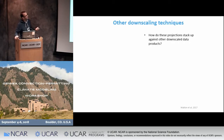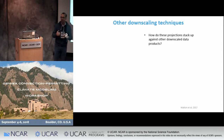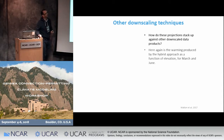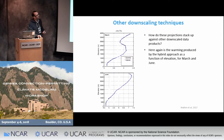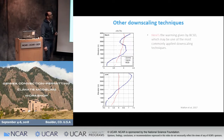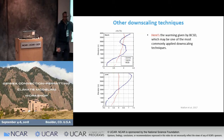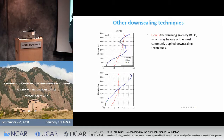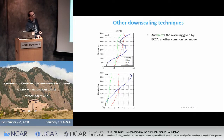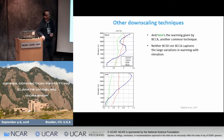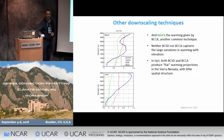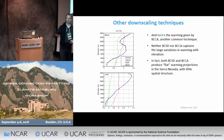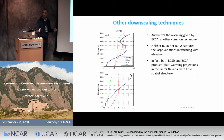How do these projections stack up against other downscaled data products? Here again is the warming from the hybrid approach as a function of elevation, compared with two commonly used purely statistical techniques. BCSD produces a very flat warming pattern with no imprint of snow albedo feedback. BCCA also gives a very flat warming pattern. At the larger scale, the warming patterns in these statistical techniques don't differ significantly from those of the GCM — they're very flat and don't have the spatial structure you see in the WRF simulation.